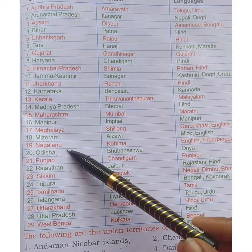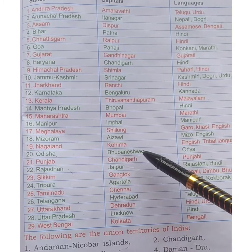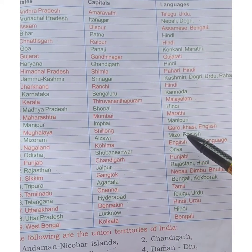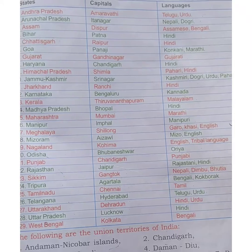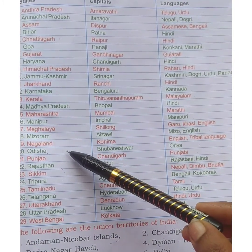Next is Nagaland. The capital is Kohima. The languages spoken are English and tribal languages.